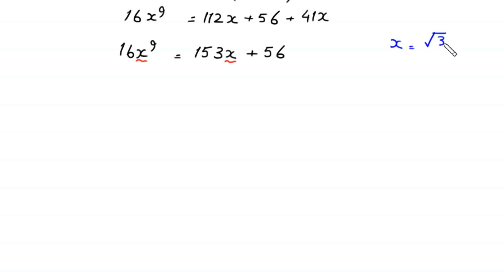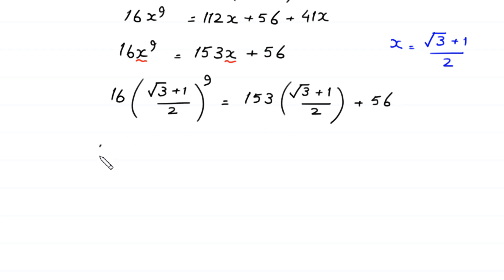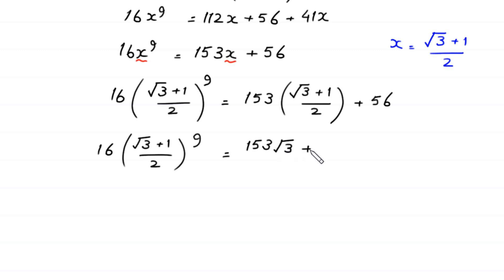So 16 times (square root of 3 plus 1 over 2) to the power 9 equals 153 times (square root of 3 plus 1 over 2) plus 56. This gives 153 times square root of 3 plus 153, all divided by 2, plus 56.